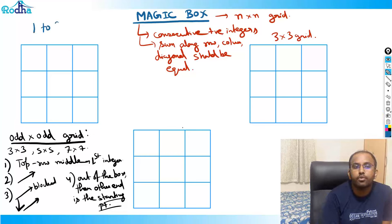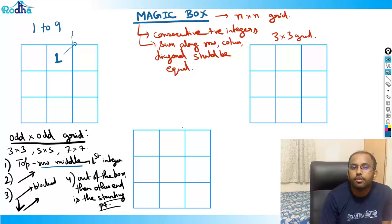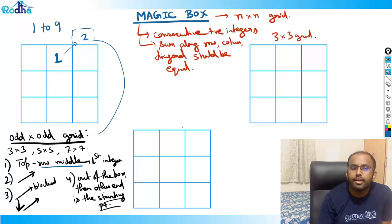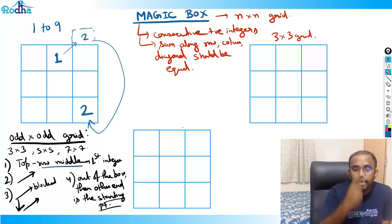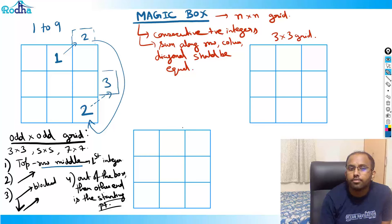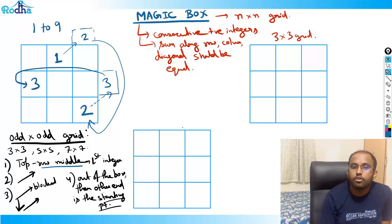I'm trying to make a magic box from 1 to 9. Always start from the top row middle — fill 1 here. Go diagonally up: 2 should go here, but it is outside the box. Other end rule: 2 goes to the bottom of the same column. Then go diagonally up again: 3 should go here, but again outside — so 3 goes to the other end. After filling 3, I try to go diagonally up but it is blocked.